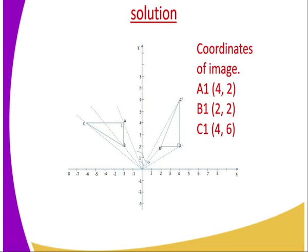You repeat the procedure with point C: join C to the center of rotation, then measure 90 degrees — this line and this line make an angle of 90 degrees. After measuring that angle, measure the distance from point C to the center of rotation, then mark the same distance along the line passing through the 90 degrees to locate the image of C. The coordinates of the image are: A'(4, 2), B'(2, 2), and C'(4, 6).